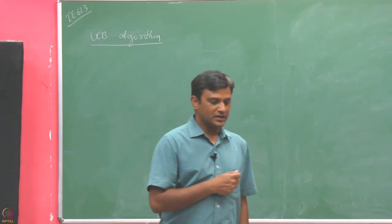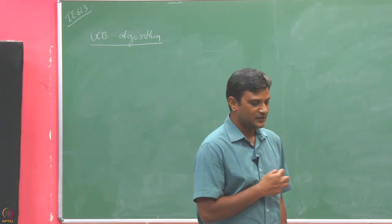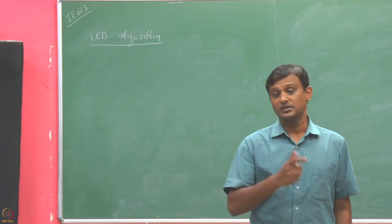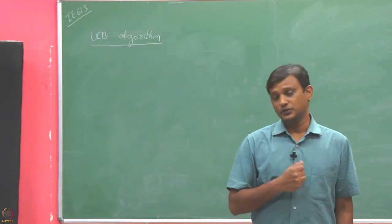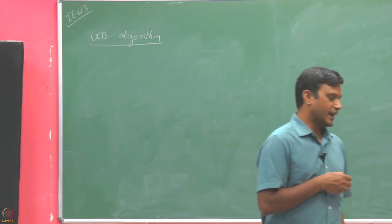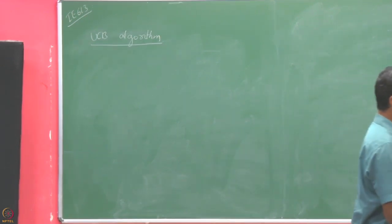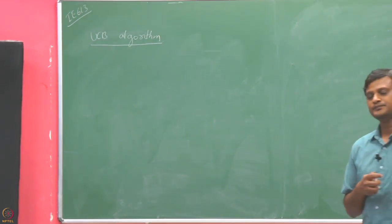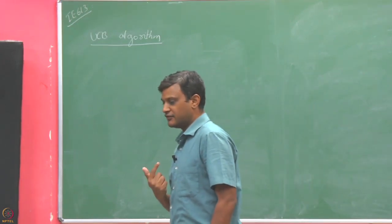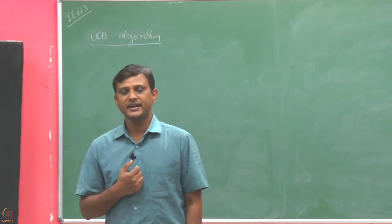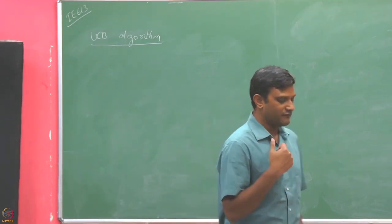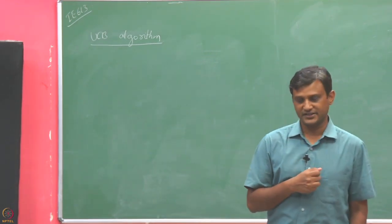In the UCB algorithm, as mentioned last time, UCB is an index-based algorithm in which we assign an index to each arm. Based on the value of these indices, we pick an arm — specifically, we pick the arm with the highest index.